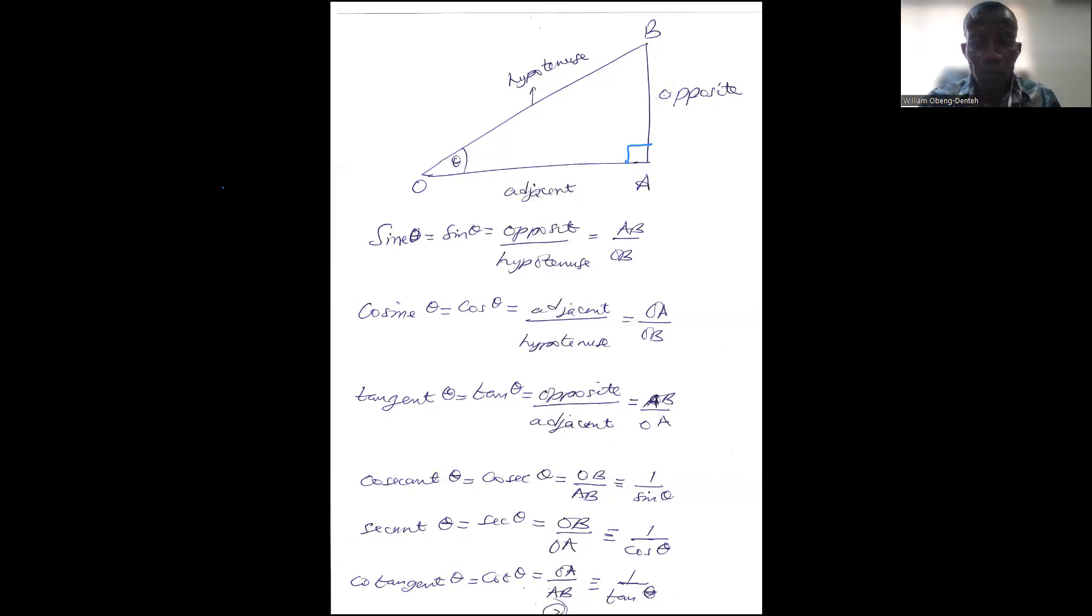That does it for today. Continue to revise. Make sure you have written them down somewhere and try to remember. This side is hypotenuse, that side is opposite, this side is adjacent. Now when we move this angle to this side, then this side becomes adjacent and that side becomes opposite. But if the angle is here, this side is opposite and that side is adjacent. Thank you for your time and attention. Bye.